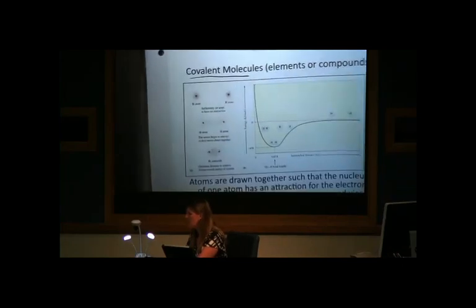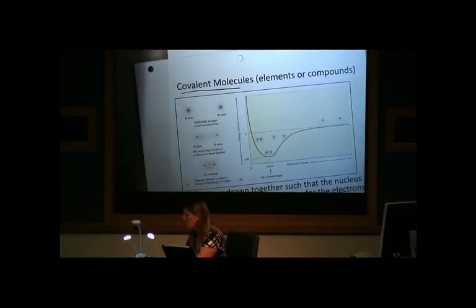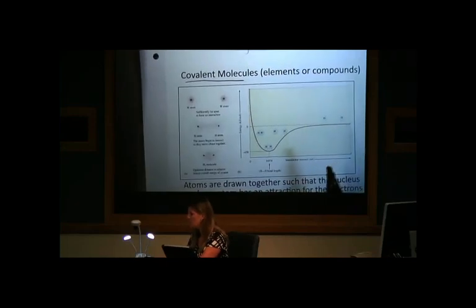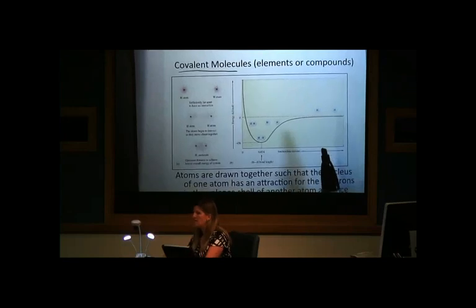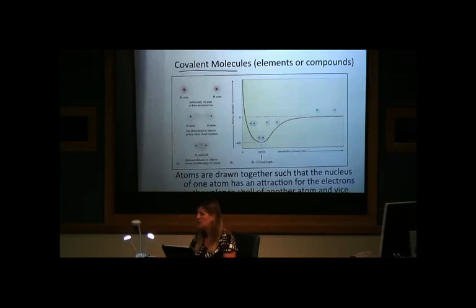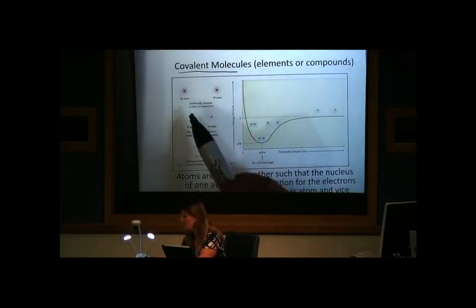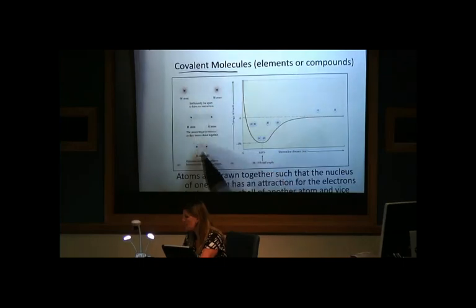So, in this slide here, what I'm showing you is a model of how covalent molecules are formed. Whereas in the ionic compounds, the individual ions were just held together by very strong electrostatic attractions, the covalent molecules are actually sharing valence electrons. That's where that word covalent comes from. This is just a model of two hydrogen atoms coming together to form a diatomic molecule, H2.